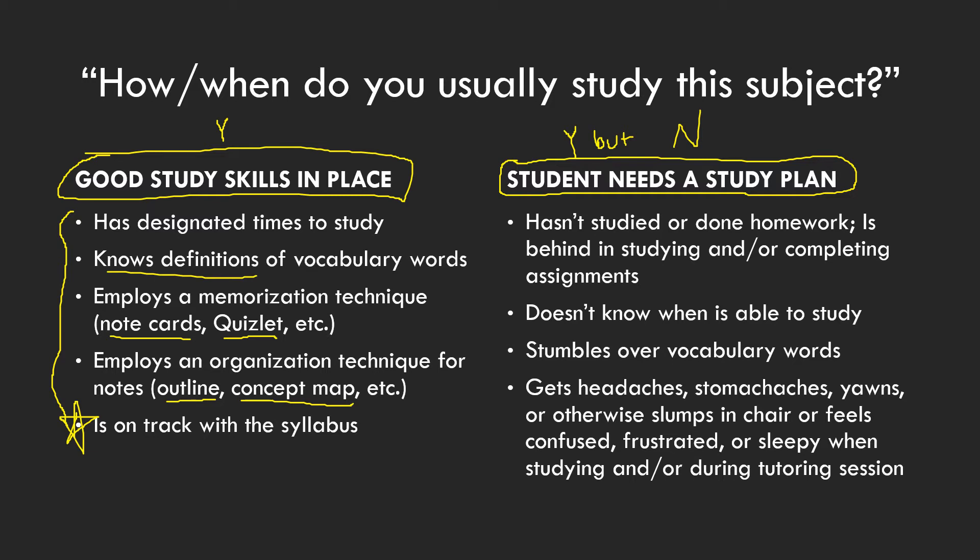If the student needs a new study plan — either because theirs isn't working or they just don't have one — the indicators are that they haven't studied, haven't done homework, are behind in studying, or behind in turning in assignments. A lot of students come in for tutoring and they're 10 assignments behind. They come in complaining they don't have enough time to get assignments turned in — that points to not having a good study structure or a time management problem.